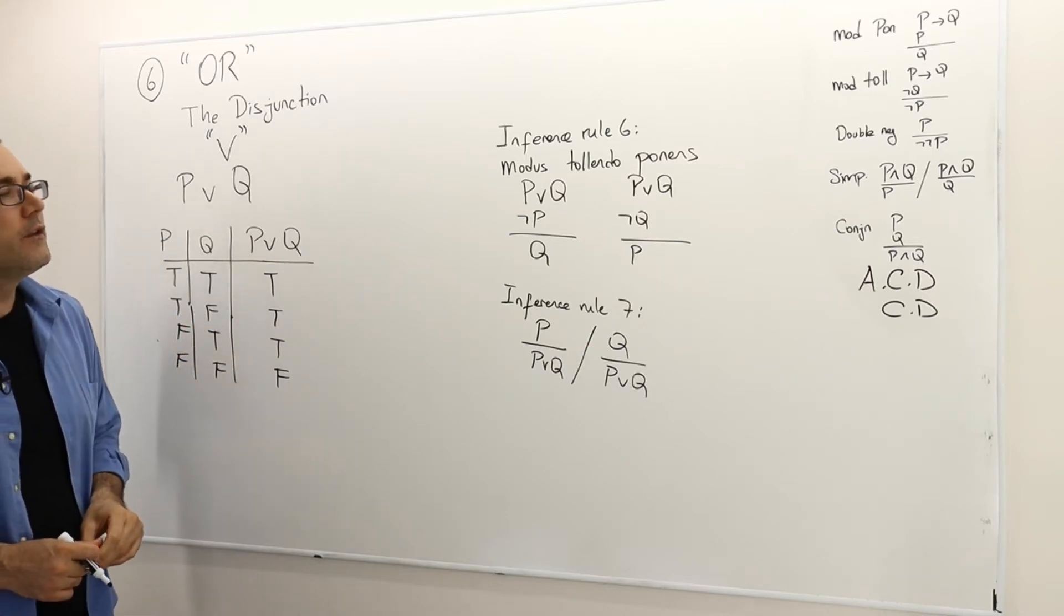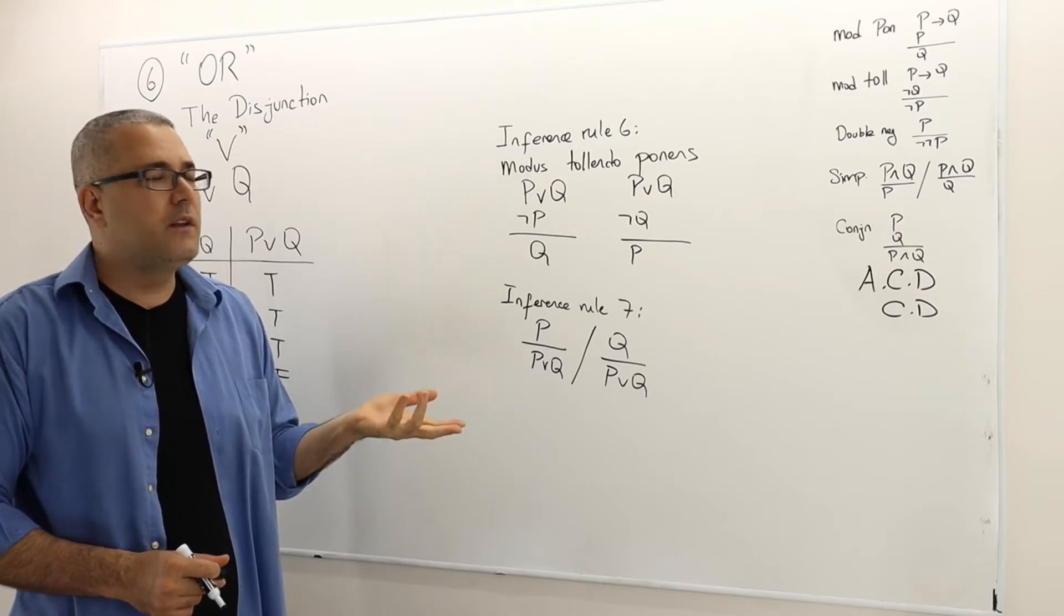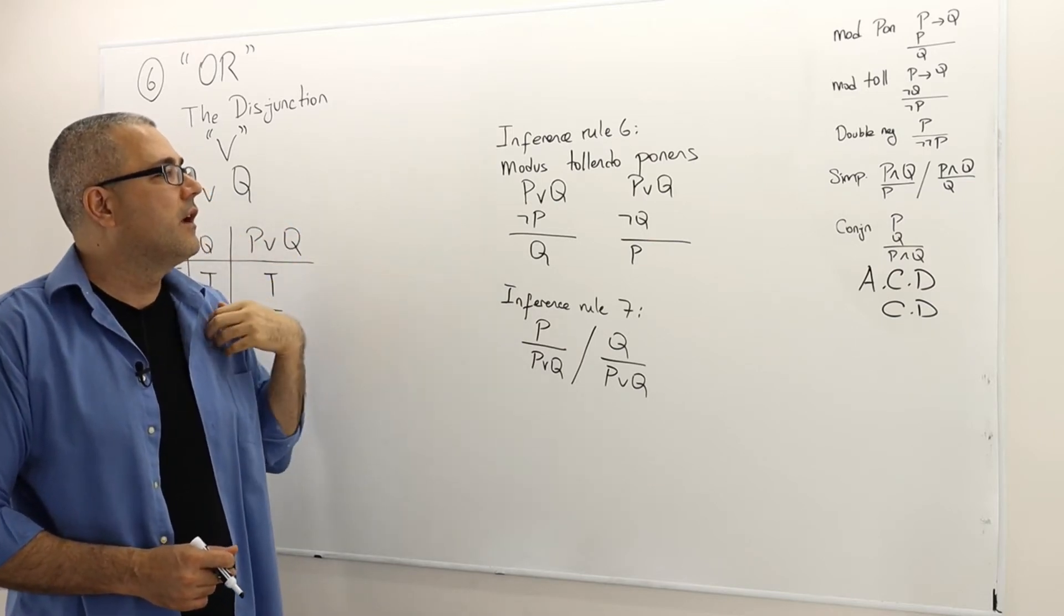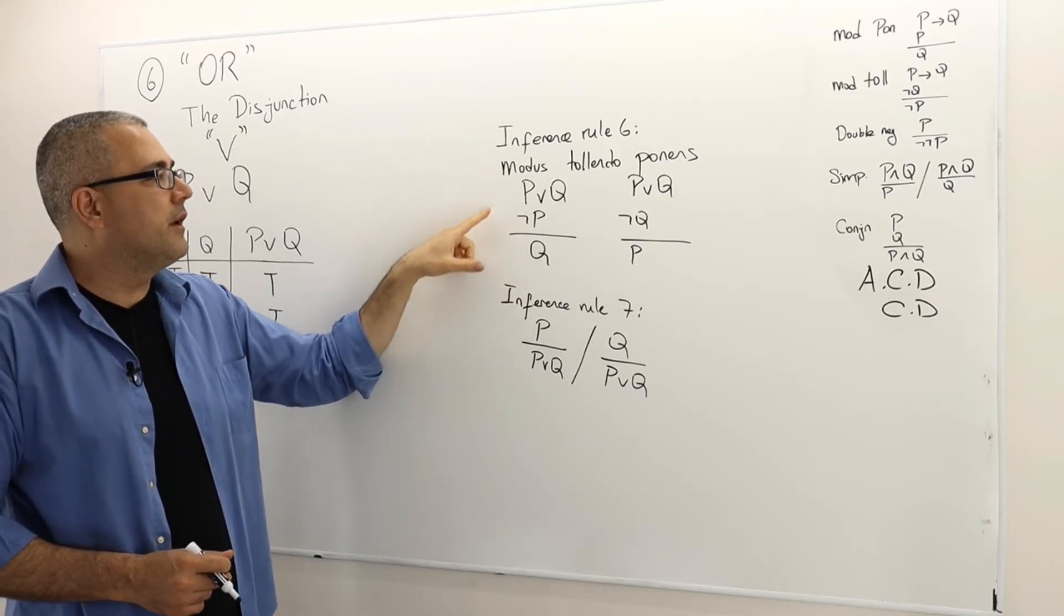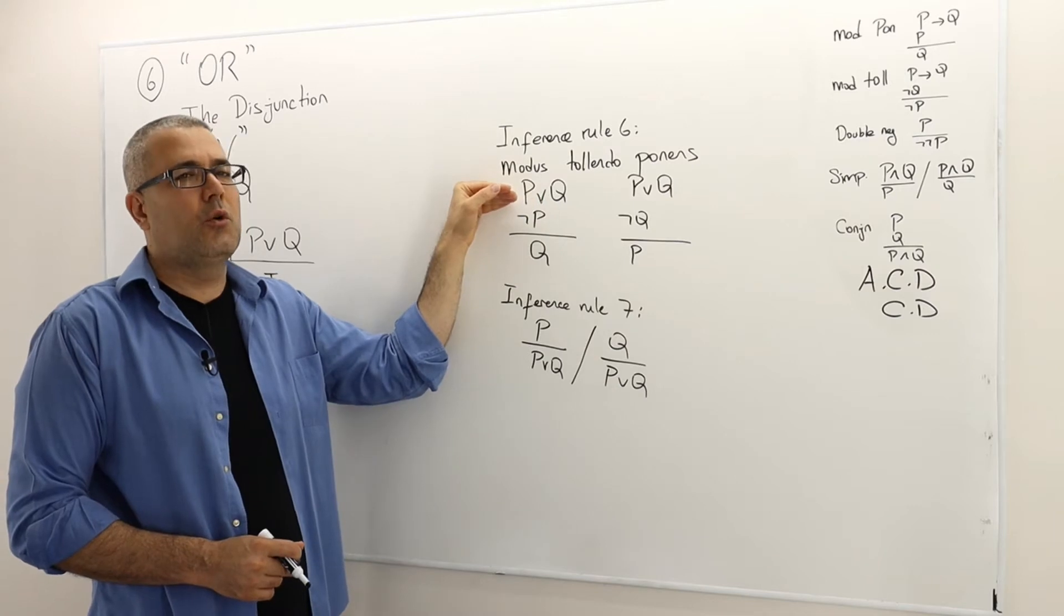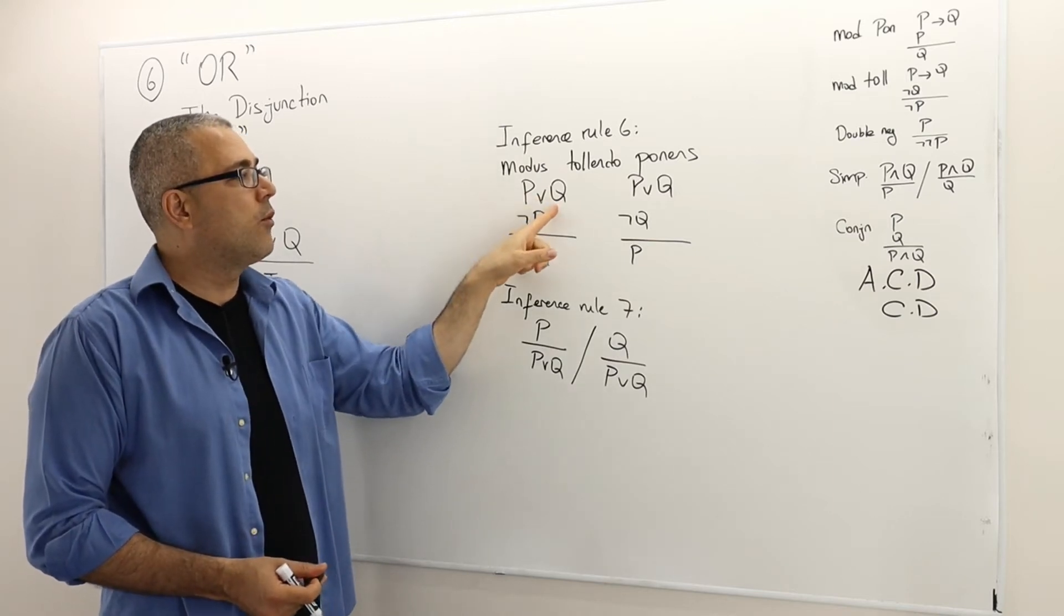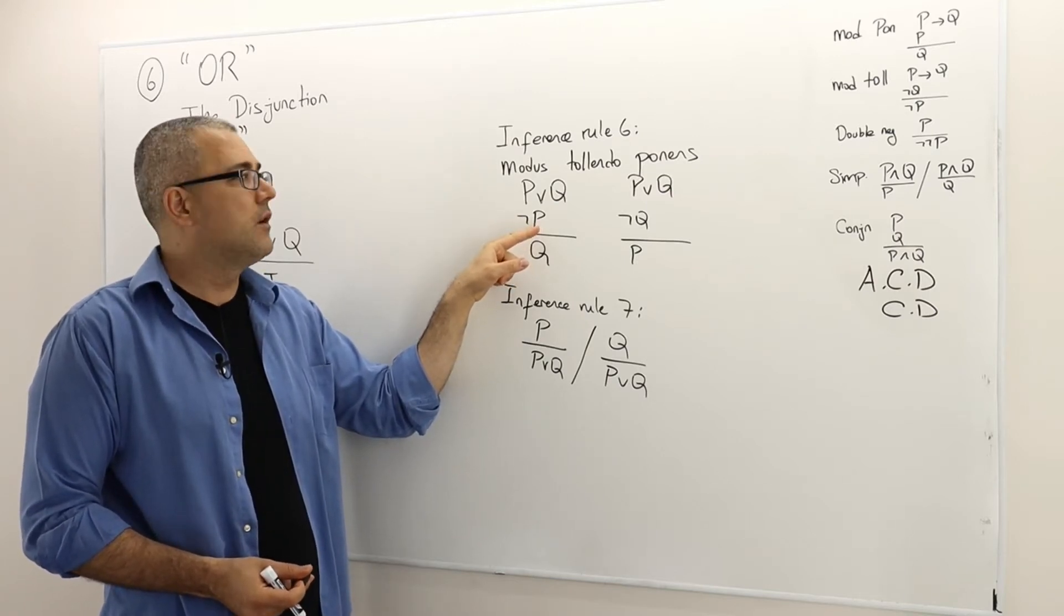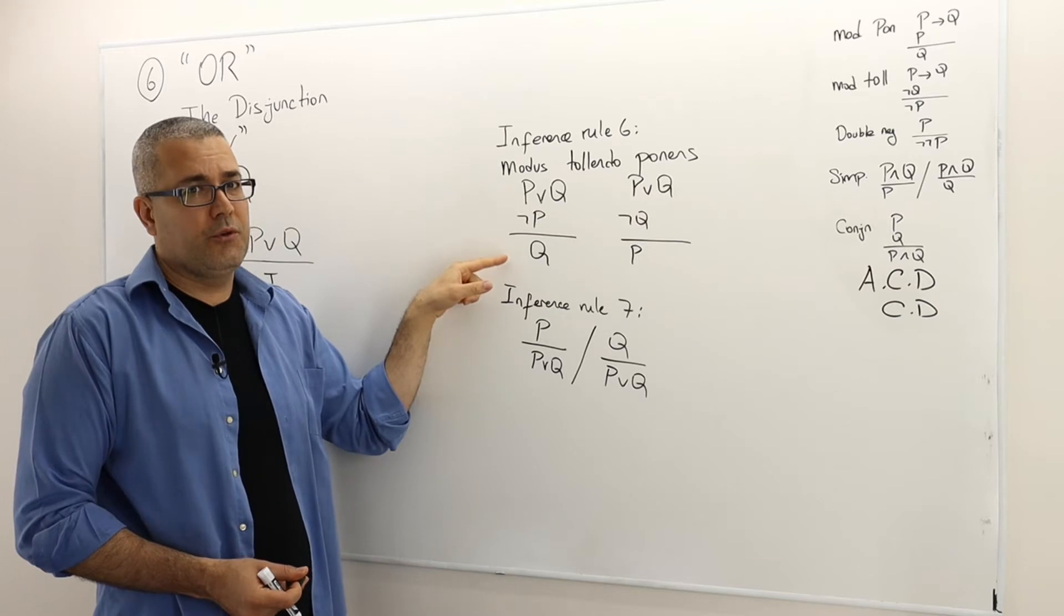The first one is inference rule number six. We're going to call it modus tollendo ponens. Intuitively, it is actually very intuitive. These are short arguments, valid arguments, and it basically says the following: if P or Q is true, then either P is true or Q is true. How do we formally write this down as an argument? If P or Q is true and not P is true, what does that mean? That means P is false. So P or Q is true but P is false, so then that means Q must be true.